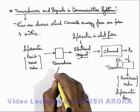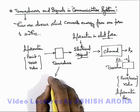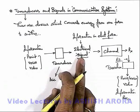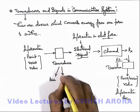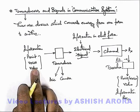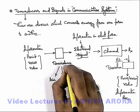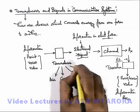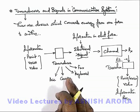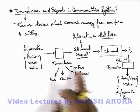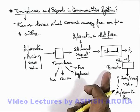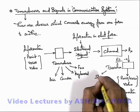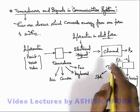A transducer can be different types of devices. For example, a microphone can be a transducer which converts a voice signal into an electrical signal. A camera can be a transducer which converts a video signal or picture into electrical signals. It can be a keyboard, or a fax machine through which information can be converted into an electrical signal. Similarly, a speaker is a transducer which converts electrical signals into sound signals.